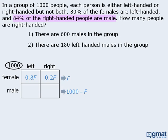Next, we're told that 84% of the right-handed people are male. We do not know the total number of right-handed people, so let's assign a variable: let r equal the total number of right-handed people. If there are 1,000 people altogether and r of them are right-handed, then the total number of left-handed people must equal 1,000 minus r. Since 84% of right-handed people are male, the number of right-handed males will be 0.84 times r.